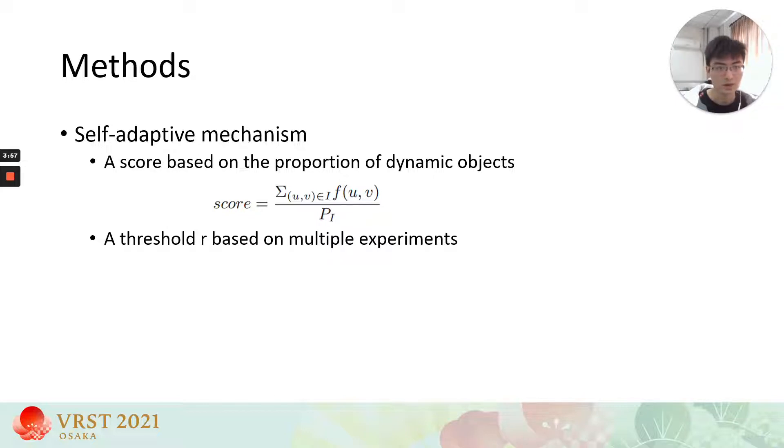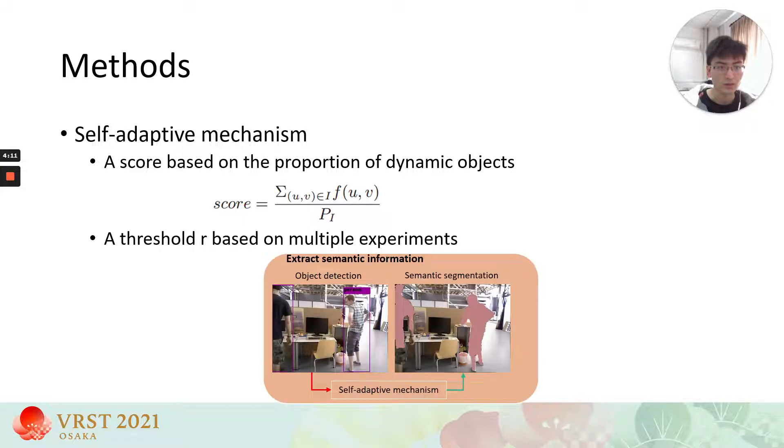Inside the self-adaptive mechanism, we set a threshold through multiple experiments to determine whether it is necessary to use segmentation. If the score is greater than the threshold, we use semantic segmentation. If the score is lower than the threshold, we use object detection.